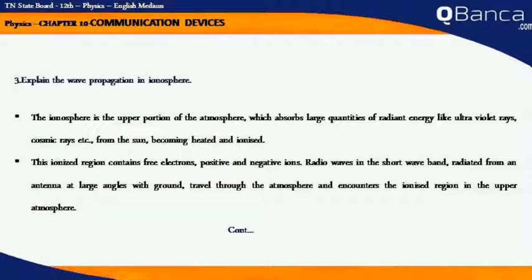Explain wave propagation in the ionosphere. The ionosphere is the upper portion of the atmosphere which absorbs large quantities of radiant energy like ultraviolet rays, cosmic rays, etc. from the sun, becoming heated and ionized. The ionized region contains free electrons, positive and negative ions.